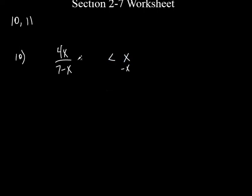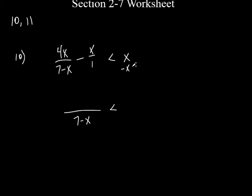So we subtract an x from here, and we subtract an x from here. I'm going to put it over 1 because I'm subtracting it from another fraction. And that's going to go to 0. When we're adding or subtracting fractions, we're going to find a common denominator. A common denominator is just 7 minus x. x minus x is 0, so I've got a 0 over here.